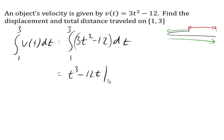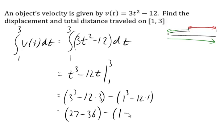We evaluate that from 1 to 3. Plugging in 3 and then plugging in 1 gives us 27 - 36 and 1 - 12. That gives us -9 minus -11 for a total of 2, feet or meters depending on what we're measuring. The difference between where I start and where I end is 2 feet or meters.